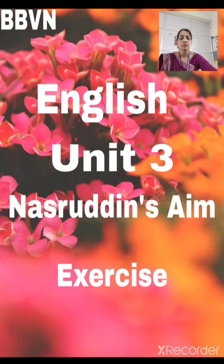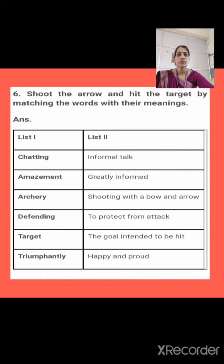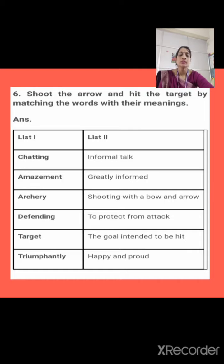First of all, open page number 50. Now look here on this page. The question is Word Building: Shoot the arrow and hit the target by matching the words with their correct meanings. Here in one column, some words are given. You have to match them with their target. The words are: chatting, amazement, archery, defending, target, triumphantly. You have to match all these words with their meanings.